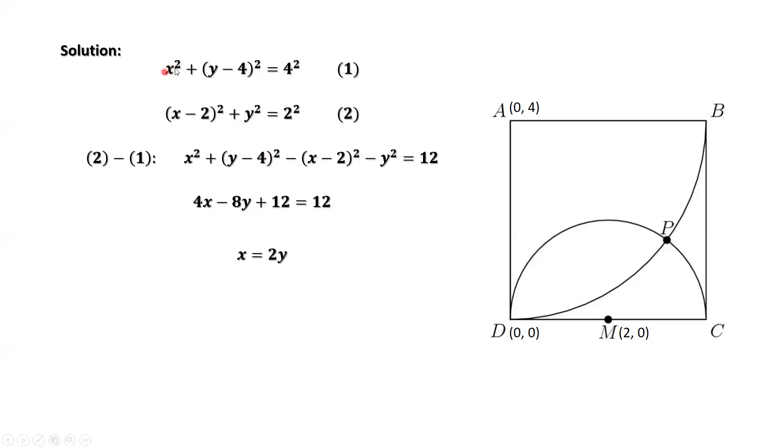We replace x here by 2y. Then we have (2y) squared plus (y minus 4) squared equals 16. What are we doing here? We use the two equations together trying to find this intersection point. This big circle and this smaller circle have two intersection points. One is here. The other is here.